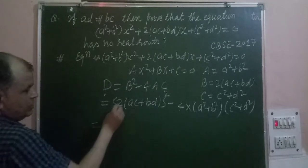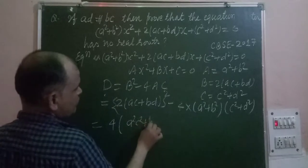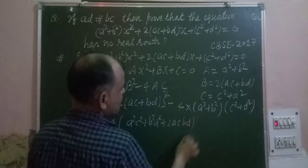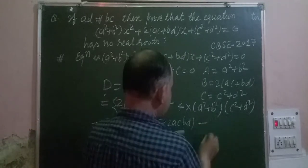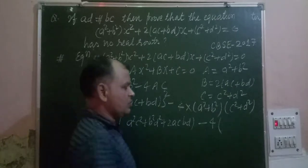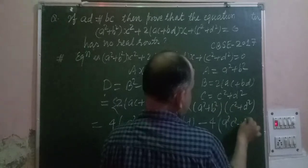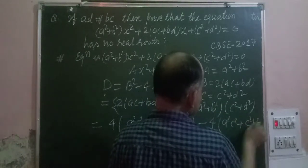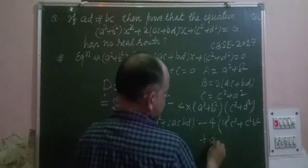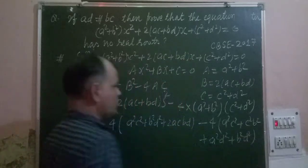So the discriminant is: [2(AC + BD)]² - 4·(A² + B²)·(C² + D²). Expanding: 4(AC + BD)² - 4(A² + B²)(C² + D²). This gives 4[A²C² + B²D² + 2ACBD] - 4[A²C² + A²D² + B²C² + B²D²].